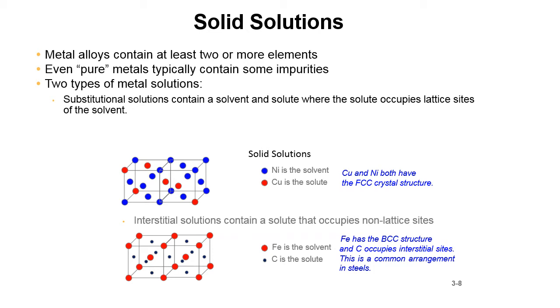Interstitial solutions contain a solute that occupies non-lattice sites. The carbon doesn't replace the iron, it just finds a spot in between the iron atoms. Same as dumping all those softballs into the back of a pickup truck filled with soccer balls. They're not taking anybody's place, they're not the same size, they're finding a spot in between.